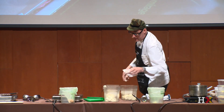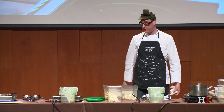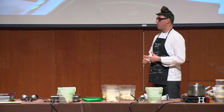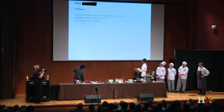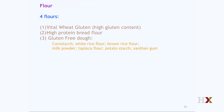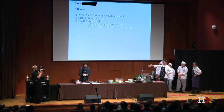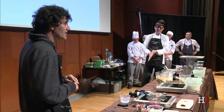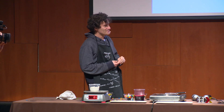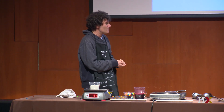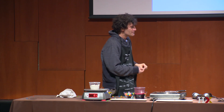You might be curious about what's in the gluten-free flour. Mark gave me the ingredient list: cornstarch, white rice flour, brown rice flour, milk powder, tapioca flour, potato starch — none of these have gluten. But at the end there's a white powder called xanthan gum. As you saw in the sauce, it does bind things together a bit, but it's basically the only binding ingredient in there.